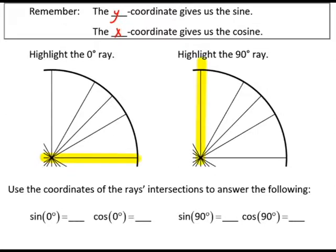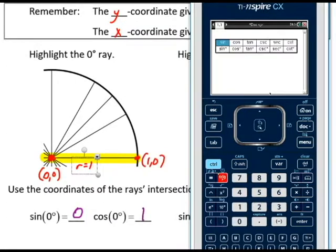Here are the answers. Remember that the center of the unit circle is the origin. And the radius is 1. On a grid, that puts this point at 1, 0. Similarly, the 90-degree ray will intersect at 0, 1. Therefore, sine of 0 degrees is the y-coordinate, 0. The cosine of 0 degrees is the x-coordinate, 1. Sine of 90 degrees is 1. Cosine of 90 degrees is 0. You can even type these into a calculator to verify.